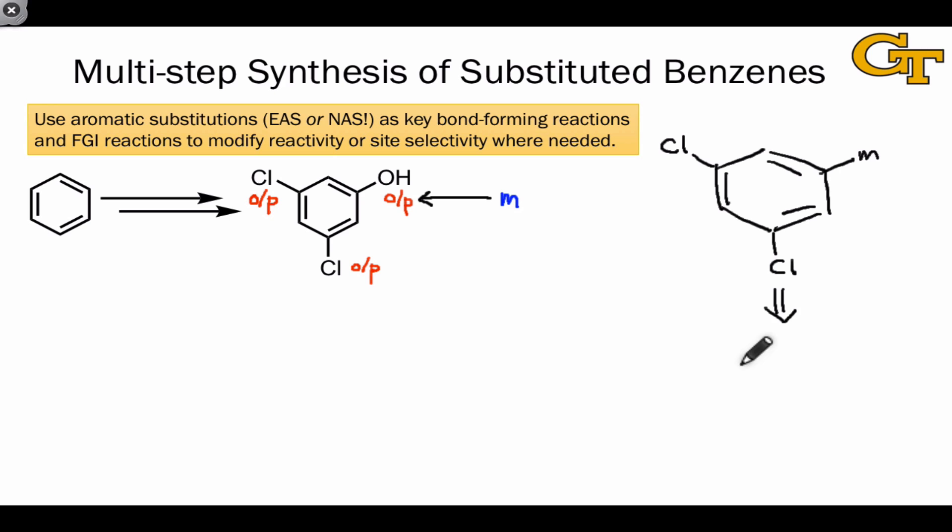So in an abstract sense, what we'd like to work backwards to is an intermediate with a meta-directing group here, and the two chlorines located meta to that. This can be synthesized then from a starting material that just has that meta-directing group, just using two equivalents of Cl2 and AlCl3. Then assuming we can install that meta-directing group through some kind of electrophilic aromatic substitution, then we can work backwards to benzene. And so really the key to this entire synthesis is the conversion of this meta-directing group into an OH group in the final one or two steps of the synthesis.